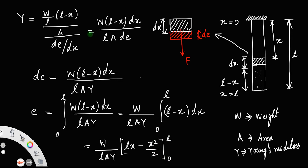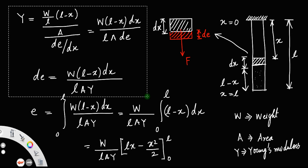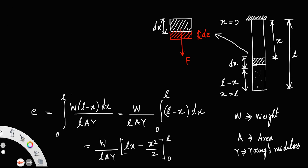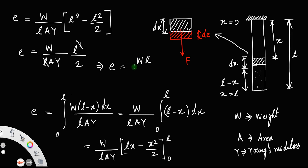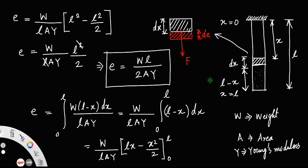Evaluating from 0 to L: substituting x equals L gives L² minus L²/2, which equals L²/2. So the total elongation E equals W/(LAY) times L²/2. Cancelling one L, the elongation is equal to WL/(2AY). This is the elongation produced in a rod hanging from a fixed support due to its own weight.